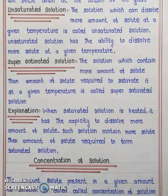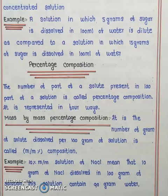I will discuss about the concentration of solution. The amount of solute present in a given amount of solution is called concentration of solution. The solution which contains less amount of solute in a definite amount of solvent is called dilute solution. The solution which contains more amount of solute dissolved in a definite amount of solvent is called concentrated solution. For example, a solution in which 5 grams of sugar is dissolved in 100 ml of water is dilute compared to a solution in which 15 grams of sugar is dissolved in 100 ml of water.